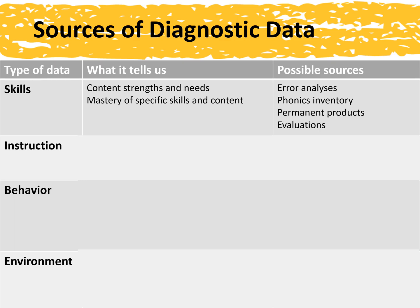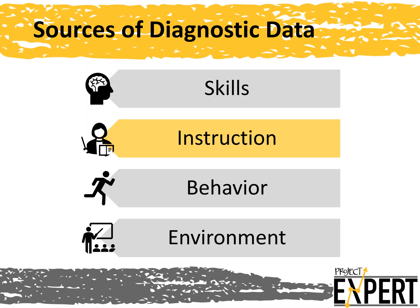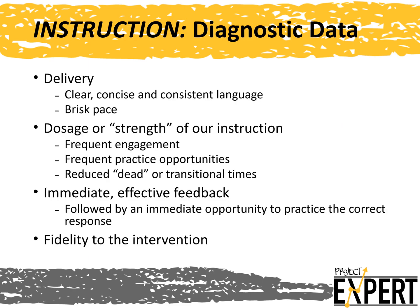We've looked at how various assessments can give us information about a student's specific skills. Now let's look at how we, as teachers, provide other sources of information. Another dimension to consider is the quality of the instruction we're providing. First, you might consider your delivery, which includes the language you use and how you present the material. You might also consider the dosage or strength of your instruction—students who are engaged and provided ample opportunities to practice with and demonstrate the material are getting a stronger dose of the intervention. Maintaining a brisk pace with little dead time means your instruction is more concentrated. Strong instruction also involves immediately, positively, and specifically providing feedback to a student who makes an error.